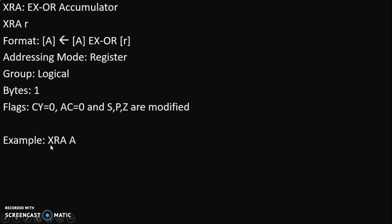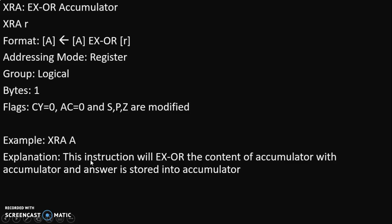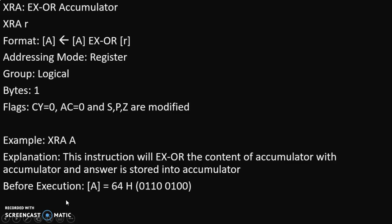Now let's take an example: XRA A. This instruction will XOR the content of the accumulator with the accumulator itself, and the answer is stored into the accumulator. So it is going to take XOR of the accumulator with the accumulator, and the answer is stored into the accumulator. Before execution, let's say the content of the accumulator is 64H, where H stands for hexadecimal — so this number is in hexadecimal form.